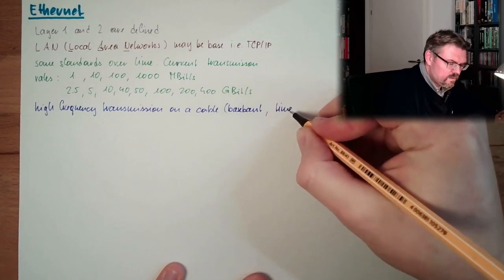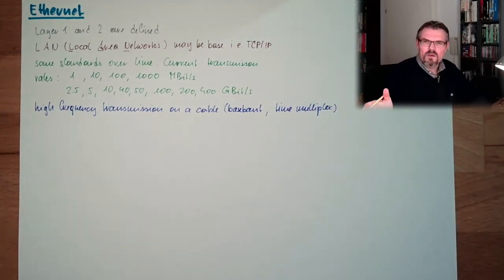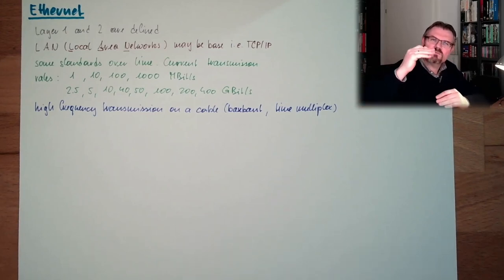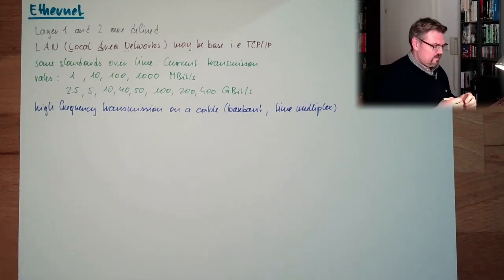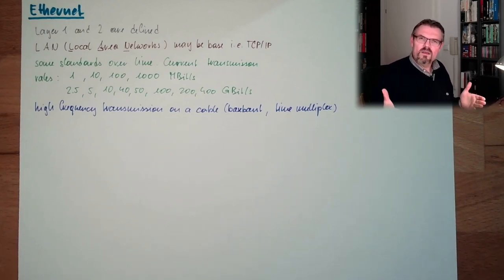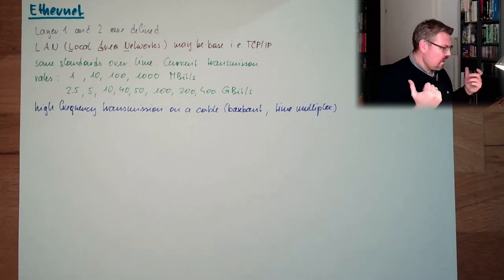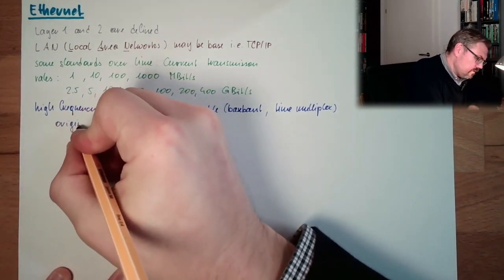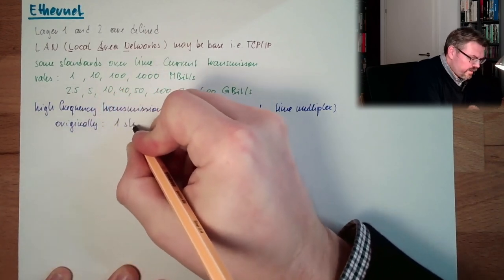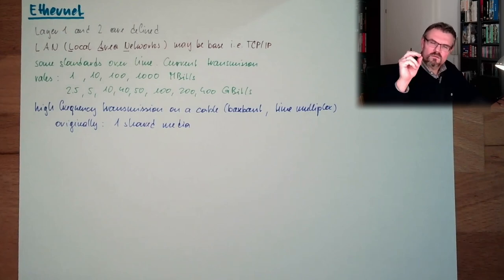Usually we have a baseband transmission with time multiplexing on a cable. This basically means I have one transmission on the wire at a time — not different transmissions in different frequency areas in parallel. We use the baseband, just putting some signal levels on there. If we want to transmit more than one signal over the same line, we do it with time multiplexing — one at a time. Originally, we had one shared coaxial cable media.